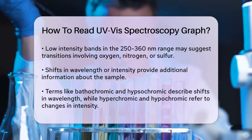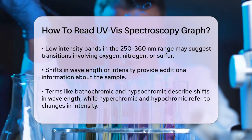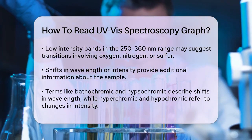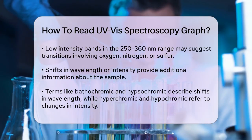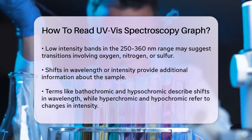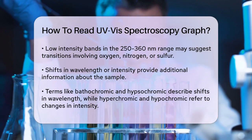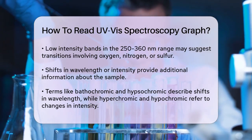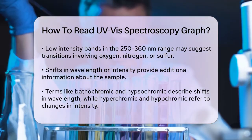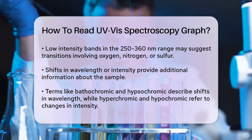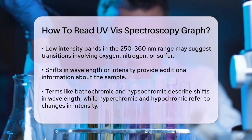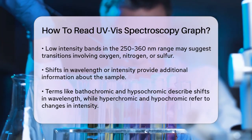Fourth, look for shifts in the spectrum. Changes in the wavelength or intensity of the peaks can give you more information. Terms like bathochromic shift (to longer wavelengths), hypsochromic shift (to shorter wavelengths), hyperchromic (increase in absorption intensity), and hypochromic (decrease in absorption intensity) describe these changes.